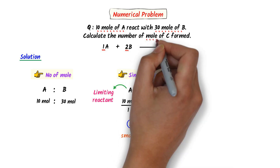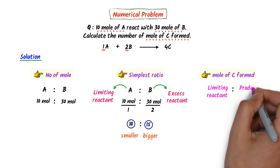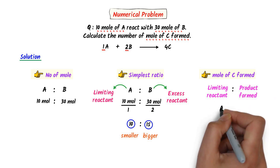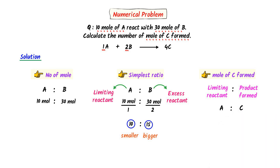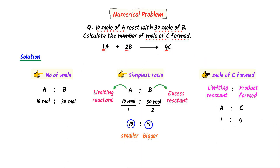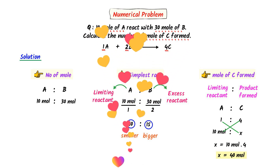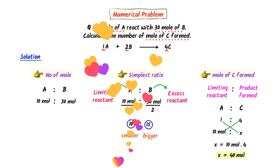Secondly, we are asked to find the number of moles of C formed. To do so, I use the relationship between the limiting reactant and the product. The limiting reactant is A and the product is C. According to the reaction, the stoichiometric coefficient of A is 1 and that of C is 4. The number of moles of A is 10 moles, which is completely used to form X moles of C. I cross multiply them and get X = 10 × 4, which gives 40 moles. Therefore, 40 moles of C are produced. Using this easy trick, we can easily find the limiting reactant and excess reactant.